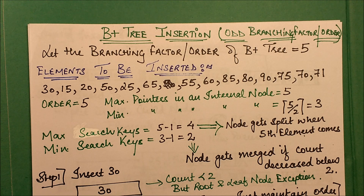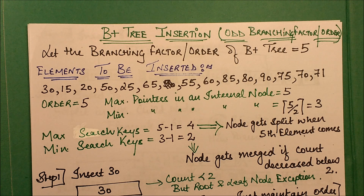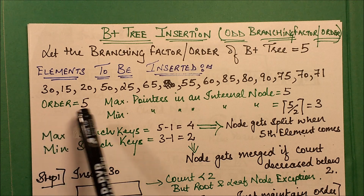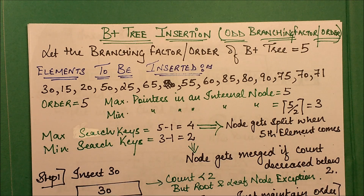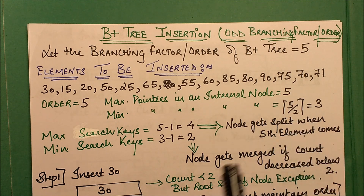In this session we'll discuss B+ tree insertion with an odd branching factor. We've already done it with an even branching factor. The branching factor taken for this example is 5, and the order is 5. The maximum pointers in an internal node are 5.